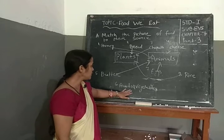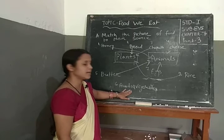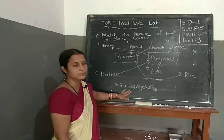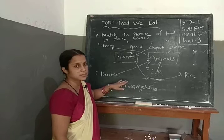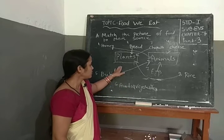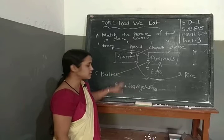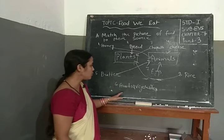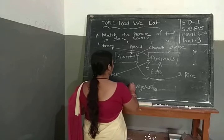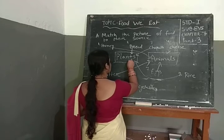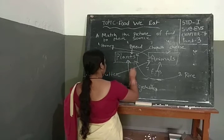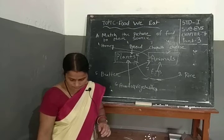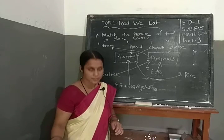Next, fruits and vegetables. Fruits and vegetables come from plants. When a tree is a plant, fruits and vegetables come from plants.